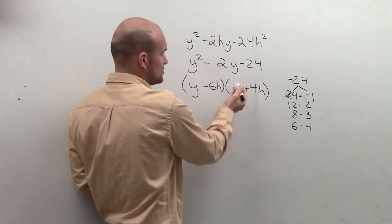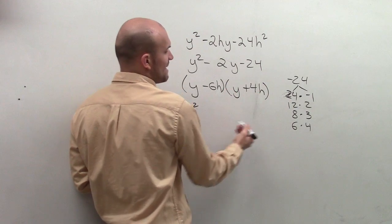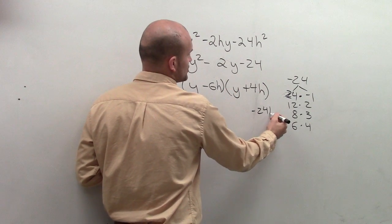And then let's just check our middle terms because we know y times y is y squared. We know negative 6h times positive 4h is negative 24h squared.